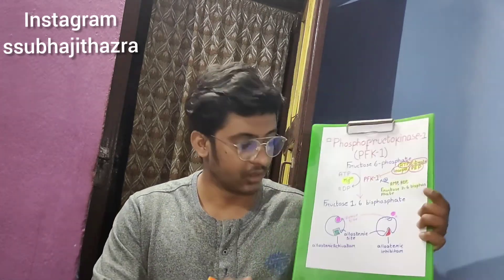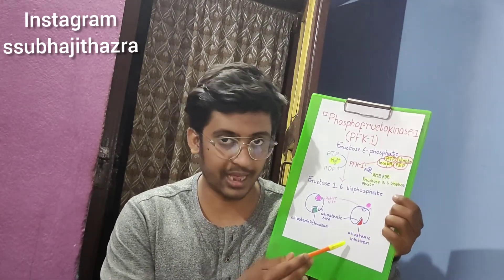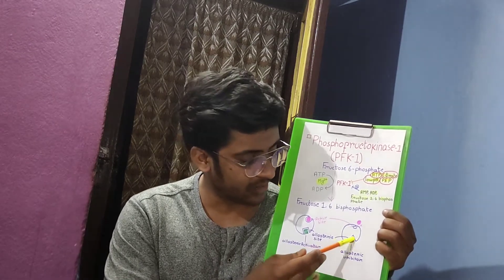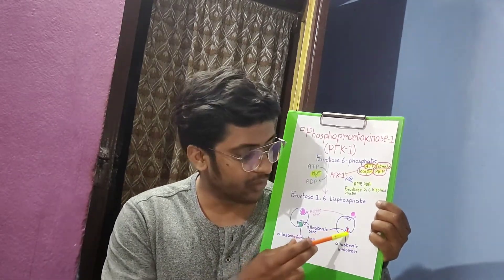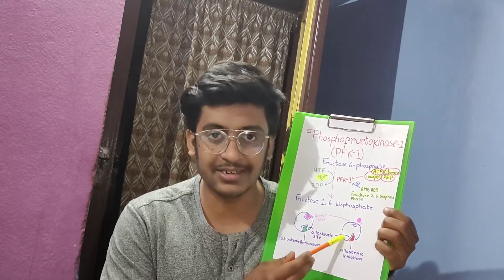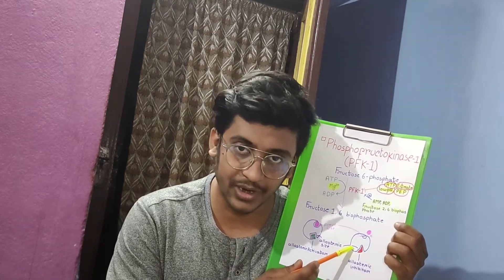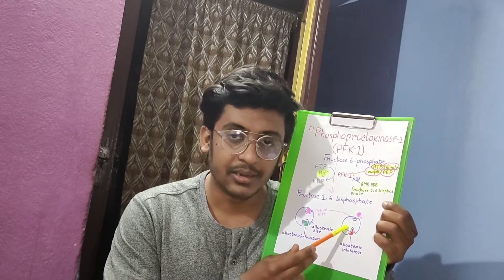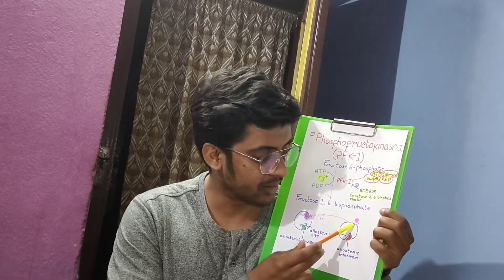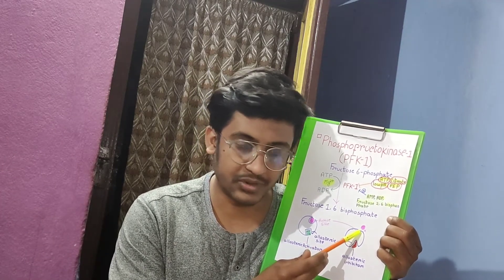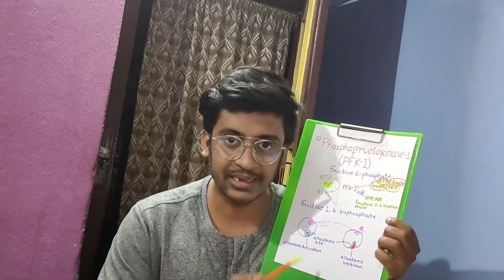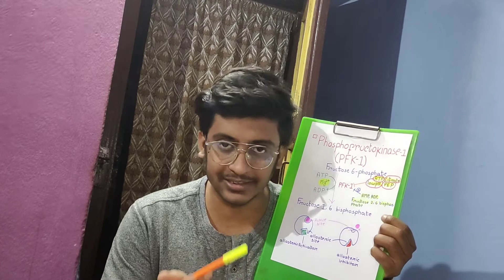There are two states of the allosteric enzyme: the R state, or relaxed state, which is the active state, and the T state, or tense state, which is the inactive state. When an allosteric inhibitor binds with the allosteric site of the enzyme, it leads to a conformational change called the T state or inactive state. In this state, the active site does not bind with the substrate, so no product is formed.